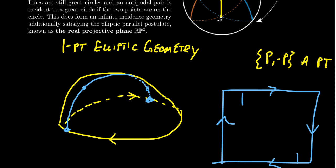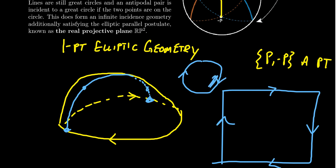This square with these type of wraparounds — where there's a wraparound with a twist — actually gives you another model of the real projective plane. Think of the hemisphere model where we took just the upper hemisphere with this gluing feature. If you take the top of the hemisphere and flatten it, you fill in a circle to get a disc that's filled in, with all the points in the middle, but you still have this wraparound feature: when you leave the boundaries, you wrap around to the antipode. We can then straighten the circular boundary into a square.